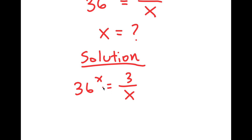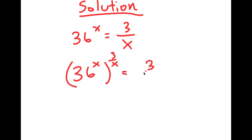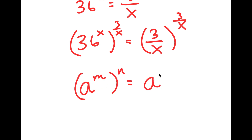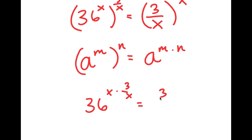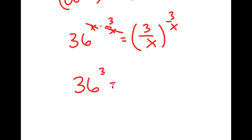What I'm first going to do is take the power of 3 over x on both sides. So now I have 36 to the power of x to the power of 3 over x, which equals 3 over x to the power of 3 over x. Using the rule that a to the power of m to the power of n equals a to the power of m times n, these two x's cancel out and I get 36 to the power of 3 is equal to 3 over x to the power of 3 over x.